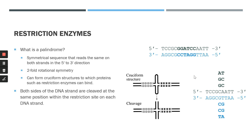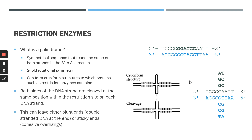Restriction enzymes cleave both strands of DNA at the same position within the restriction site. The restriction enzyme can leave either blunt ends or sticky ends. If the enzyme cleaves directly down the center of the recognition site at the same position on both strands, it leaves no overhangs — this is a blunt cut. However, if it cleaves at a position that is not in the center, such as after the first G in the 5' to 3' direction on both strands, it produces a small overhang called a sticky end or cohesive overhang.